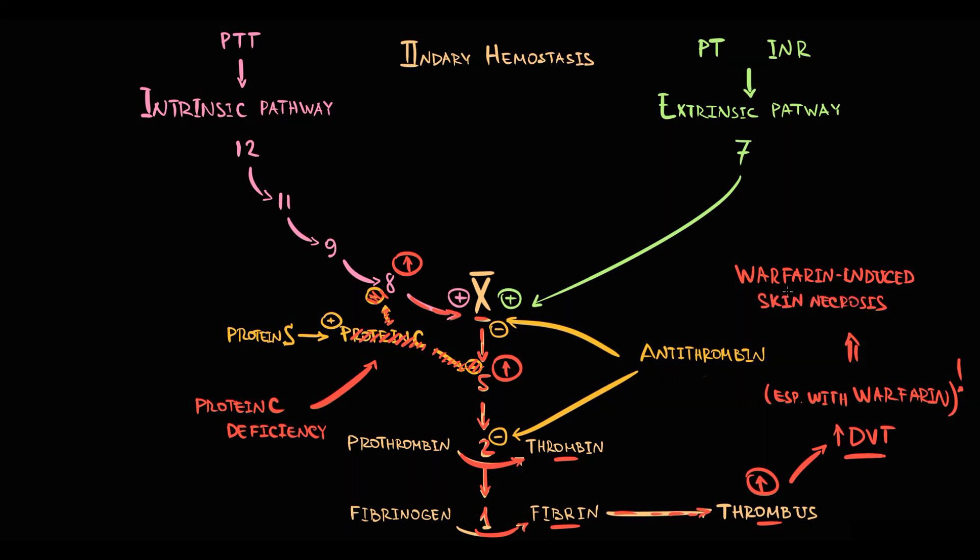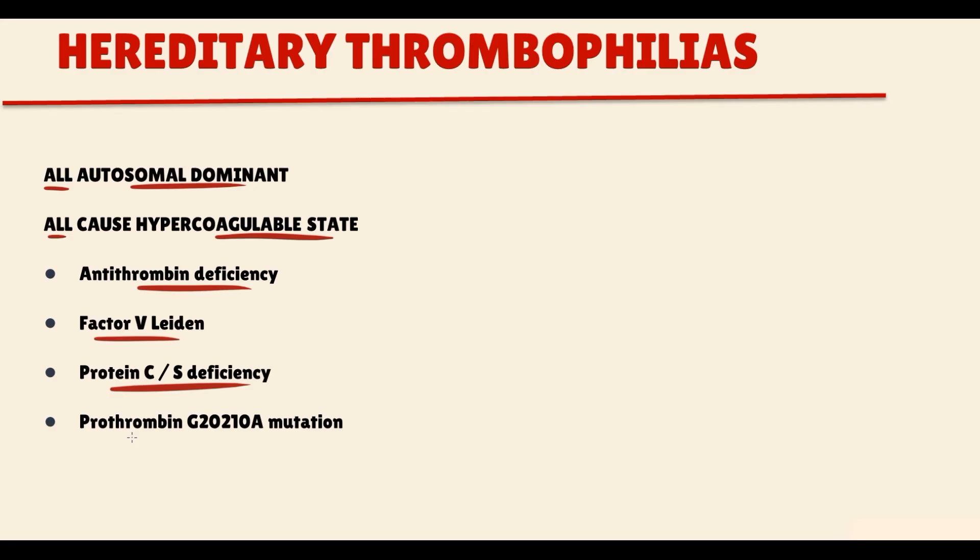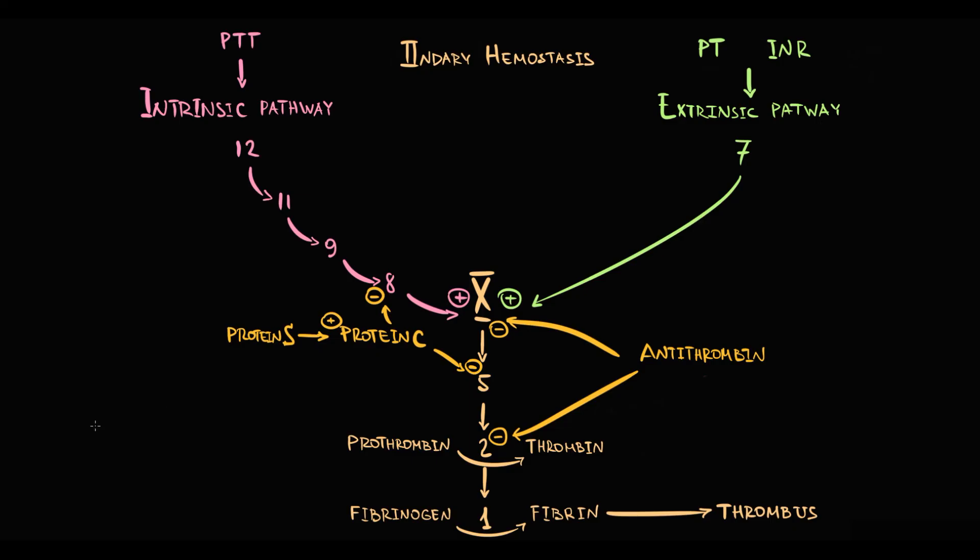Also we have the disorder called prothrombin G20210A mutation. The concept here is that the point mutation in three prime untranslated region in DNA molecule results in uncontrollable production of prothrombin molecules. And obviously with increasing amount of prothrombin formation of fibrin increase and thereby more thrombi formed. And this greatly increase the risk of venous thrombosis.